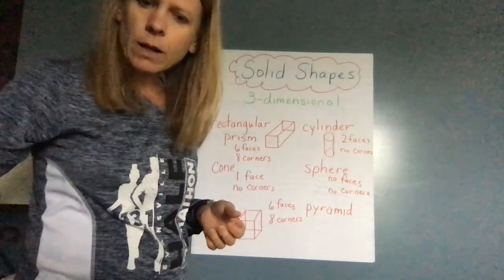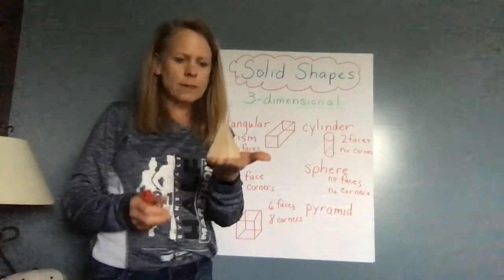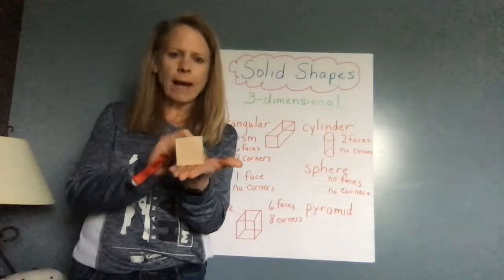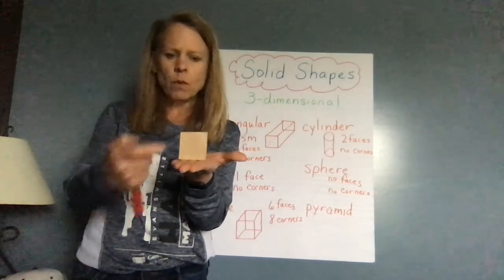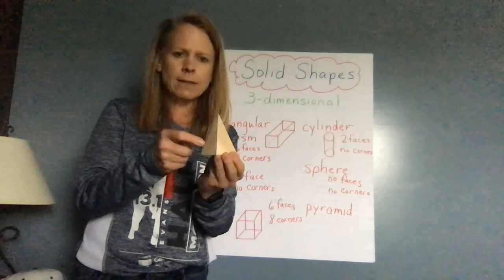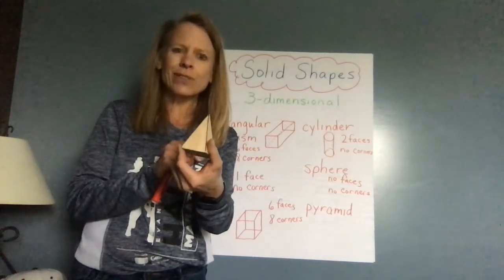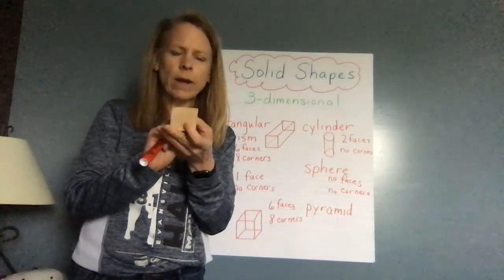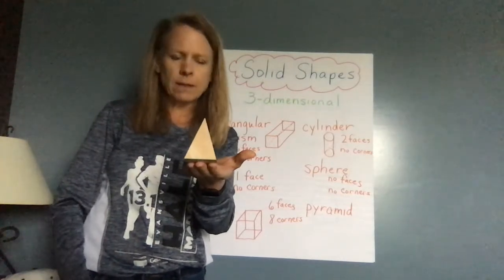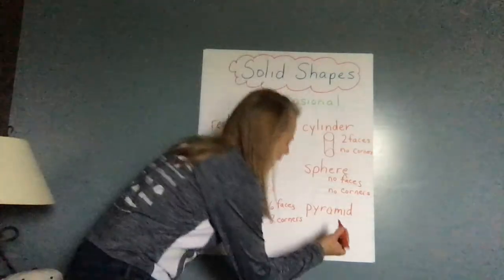The last one I want to talk about is a pyramid. A pyramid looks like this. When we have a pyramid, we have the base of the pyramid, which is a square. And then each of the faces on this part are what? Triangles. A pyramid has one face at the bottom, two, three, four, five faces. One is a square. The rest are triangles. So five faces.